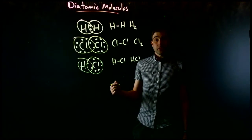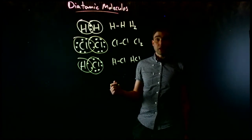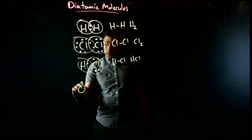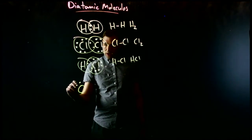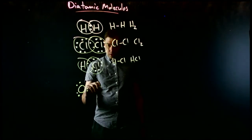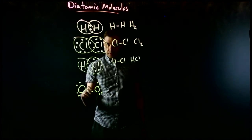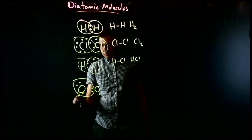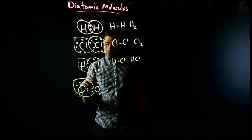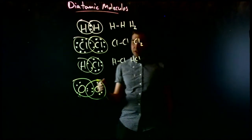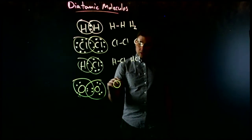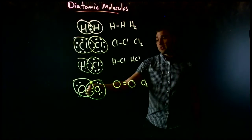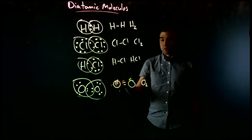Atoms can share more than one pair of electrons; that's called a double bond. We're going to do that with oxygen, and then show a triple bond with nitrogen. Starting with oxygen gas: oxygen is in group 6, so each oxygen has 6 electrons in its valence shell. Drawing the circles in, we can see we're sharing two pairs of electrons between the oxygen atoms. The way we write that is oxygen with a double bond, still giving us O2. So we're sharing two pairs of electrons, which means two bonds, which is why we draw a double line.